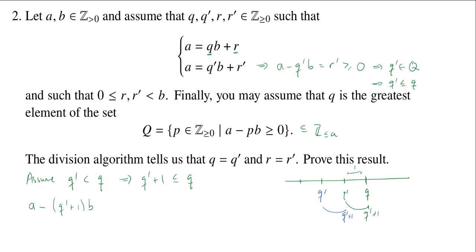In fact, once we knew that the greatest element of big Q was little Q, we actually knew that this set was 0, 1, 2, through Q. So we get all of the integers up to and including Q.